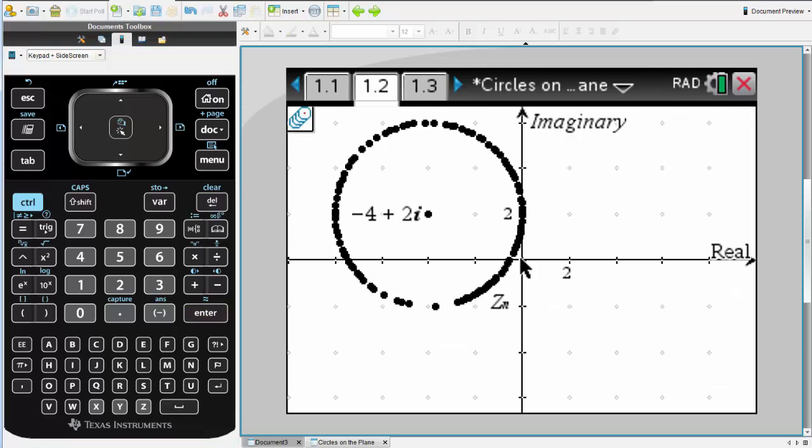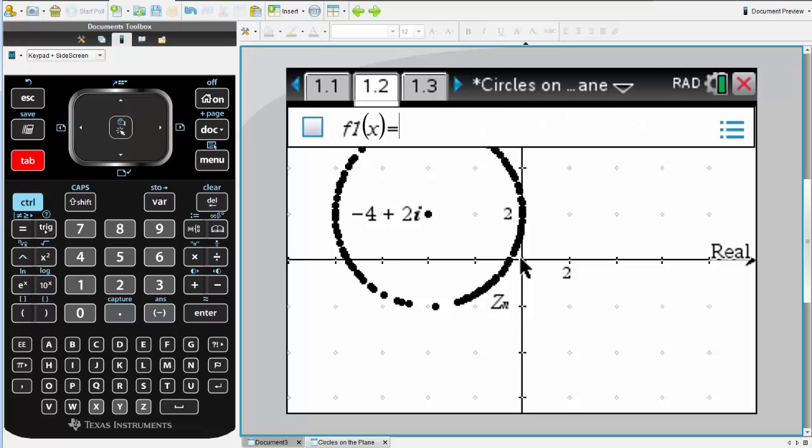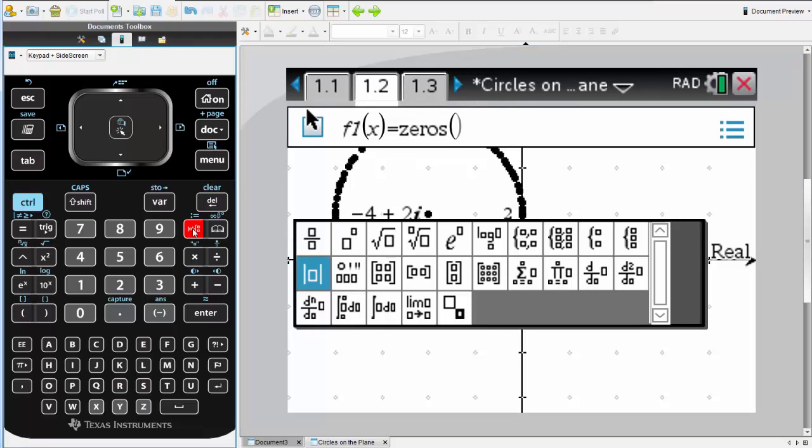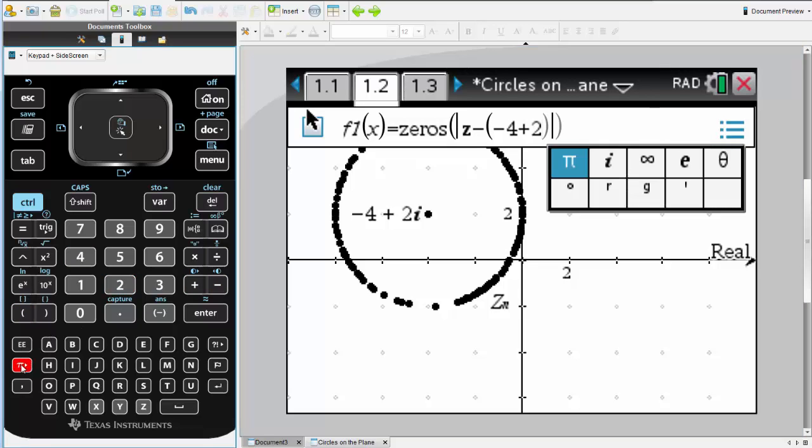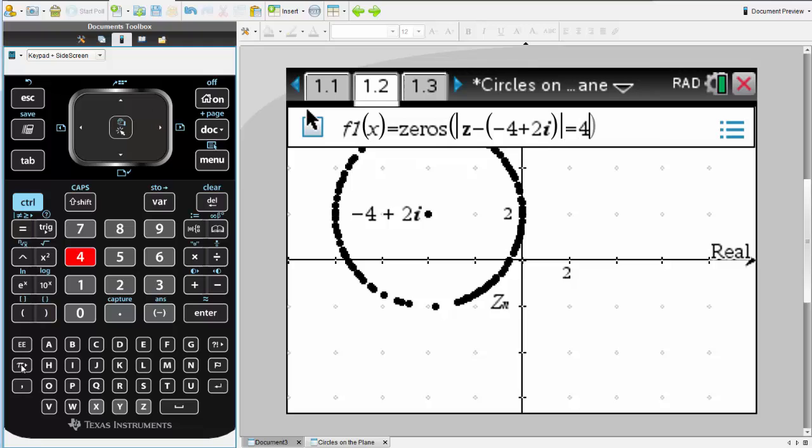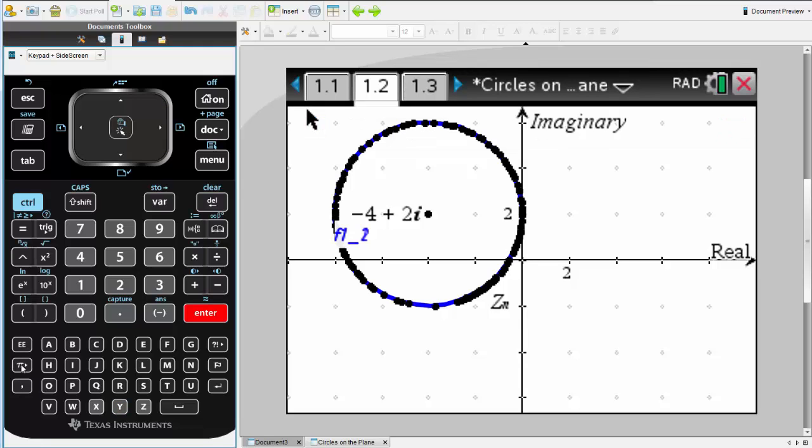We can also draw that using the calculator using a command called zeros. What we'll do is write out our expression as we did before. Now, normally we'd say that expression is equal to that distance. However, we're looking for zeros. So if I subtract 4 from both sides, that expression will equal 0. And we'll plot all those points.